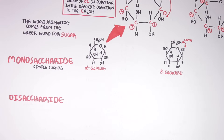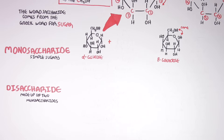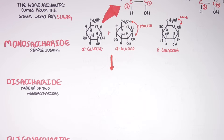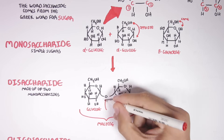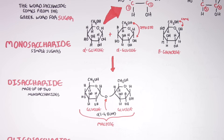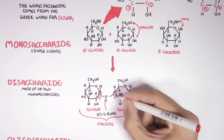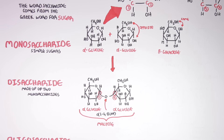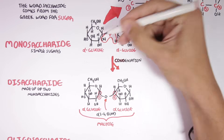Now let's look at disaccharides. Disaccharides are made up of two monosaccharides. For example, a glucose molecule and another glucose molecule can form a bond with each other. This new disaccharide is called maltose — essentially two glucose molecules linked together by an alpha-1,4 glycosidic bond, because carbon number one and carbon number four of these glucose molecules are involved in the linking process, and both are in an alpha configuration.